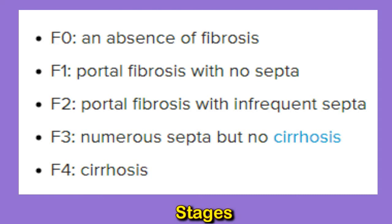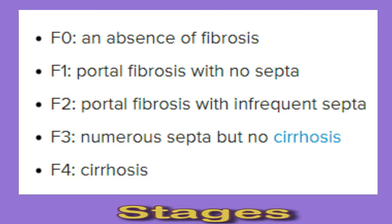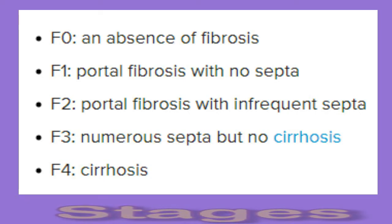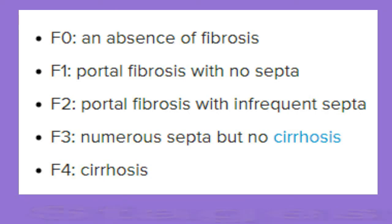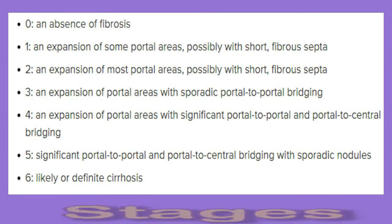Cirrhosis is scar tissue building up in the liver. This can occur due to unchecked fibrosis. The most advanced type of fibrosis someone can have before developing cirrhosis, according to the METAVIR system, is stage A3 F3. The Ishaq fibrosis scoring system is more complex and typically runs from 0 to 6.